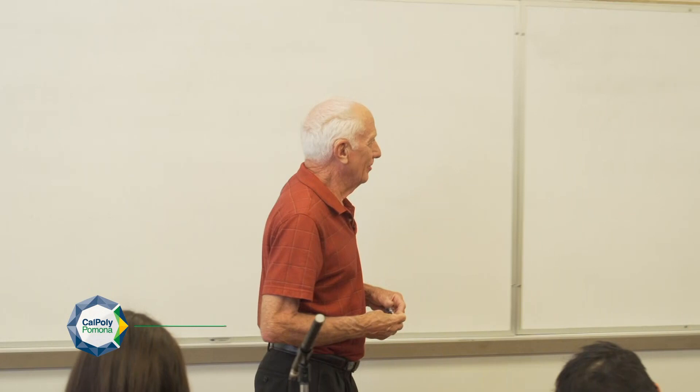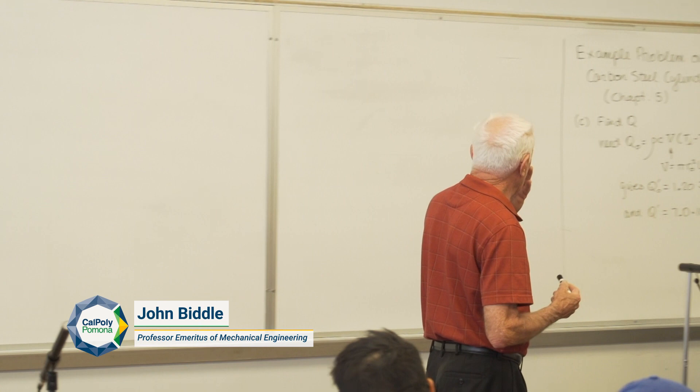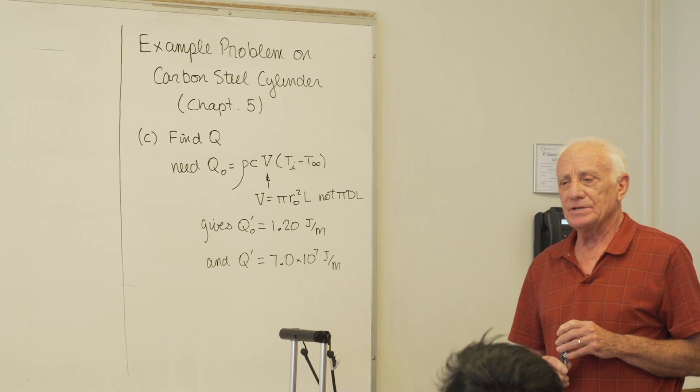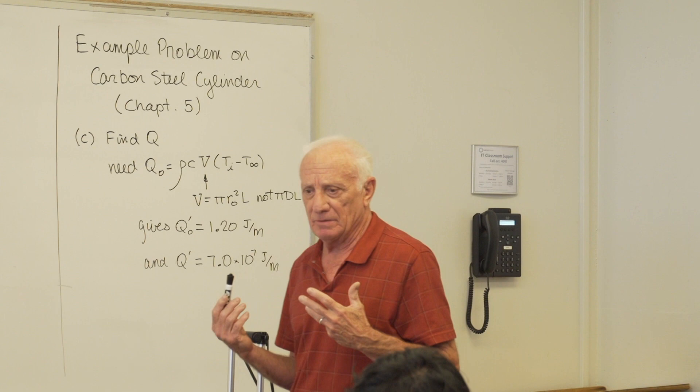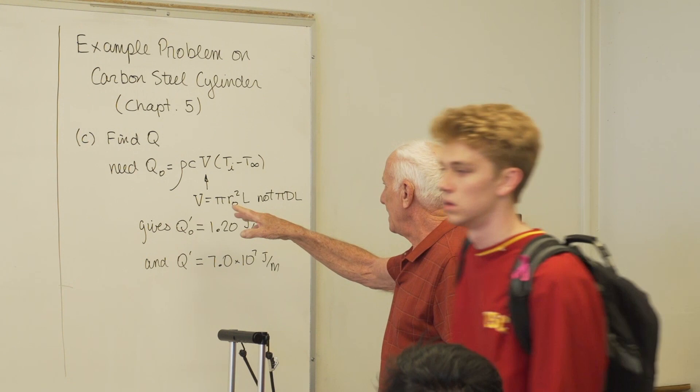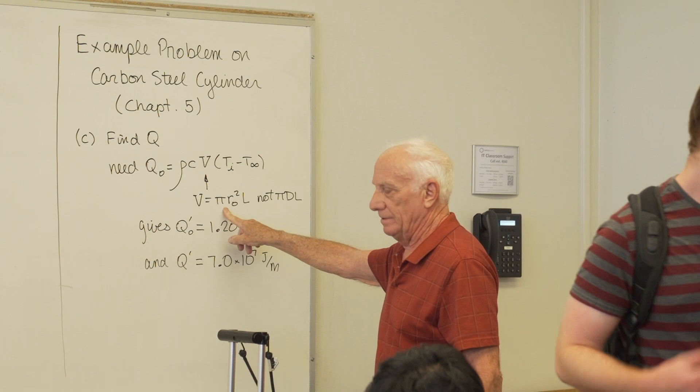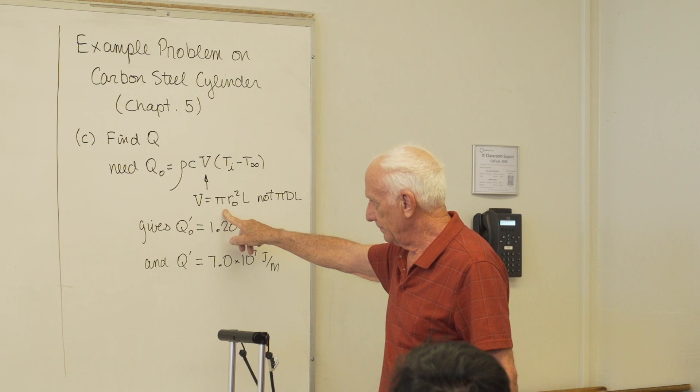A correction on the class notes from last time. We were doing an example problem on carbon steel cylinder transient heat conduction, Chapter 5. Part C was to find how much energy had been gained by the cylinder after a certain amount of time. I didn't put the volume down — I put the surface area. The volume of that cylinder is pi r squared times L. So make that change in your notes, and here are the two correct answers for Part C.